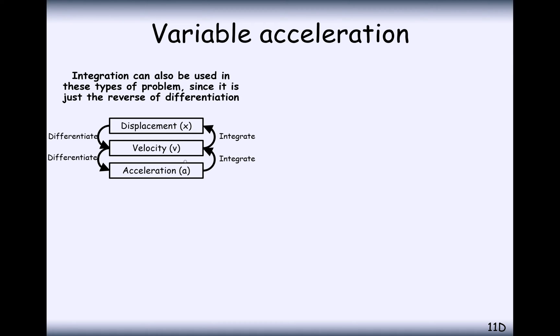You've seen this diagram before. If we've got displacement, x, as a function of time, then we can differentiate to find velocity and differentiate again to find acceleration. Well, the reverse process works as well. If we integrate acceleration with respect to time, we get velocity. And if we integrate velocity with respect to time, we get displacement.